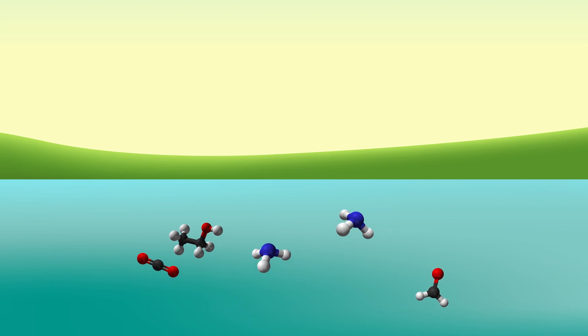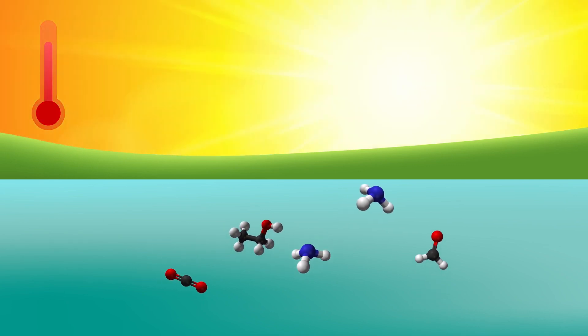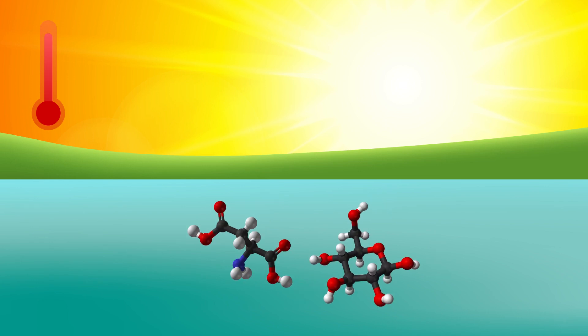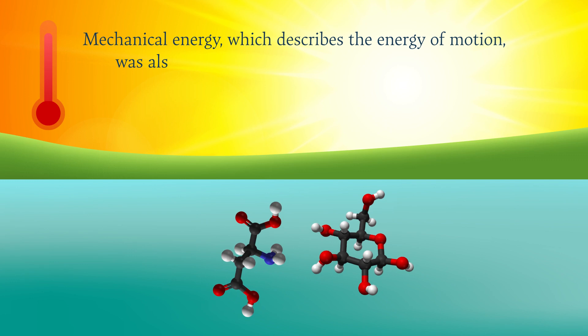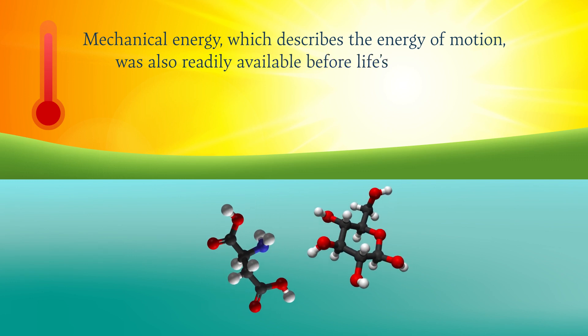Many energy sources, including light and heat from the Sun, were available to provide the energy needed to drive chemical reactions. Mechanical energy, which describes the energy of motion, was also readily available before life's emergence.